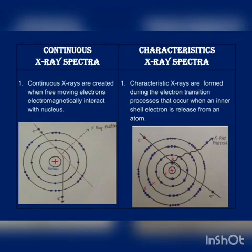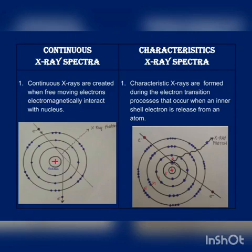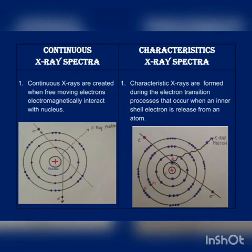Continuous X-rays are created when free-moving electrons electromagnetically interact with the nucleus. The target atom is considered, and one electron comes from the filament with kinetic energy equal to half mv squared. The electron may collide with another electron from the target atom, or go straight without any collision. If it does not collide, the positive nucleus attracts the electron, changing its path due to the force of attraction, and the electron gets bent.